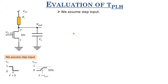We are calculating TPLH, which is the low-to-high transition of the output, so we apply a high-to-low transition at the input. For T less than zero, the input is at logic level one; immediately after T = 0, the input is at logic level zero. So VOL is the nominal logic level low, and we assume VOL is less than VT, so the transistor is in cutoff.